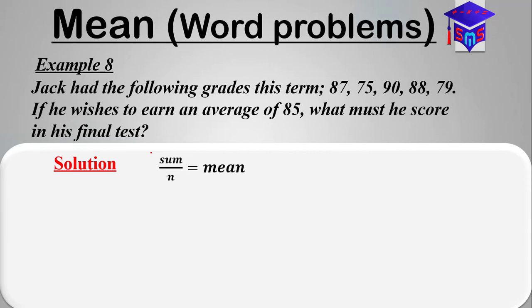We have our basic equation where sum over n equals the mean. Now we don't know what Jack is going to score in his final test, so let Jack's grade or score in the final test be y.